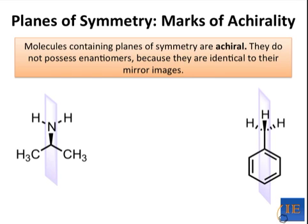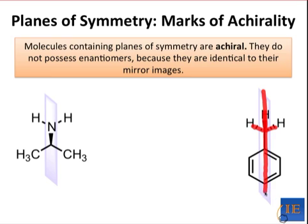Similarly for toluene, if I draw it in a stylized form where one of the hydrogens is coming out and two of them are going back away from us, a plane of symmetry that contains that C–H bond and bisects the ring is a plane of symmetry of the molecule. These H's would be interconverted by that reflection, as would all of the carbons in the ring. Nothing on the plane would move.